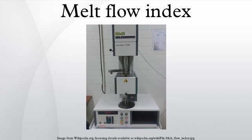Measurement: ISO standard 1133-1 governs the procedure for measurement of the melt flow rate. The procedure for determining MFI is as follows. A small amount of the polymer sample is taken in the specially designed MFI apparatus. A die with an opening of typically around 2 mm diameter is inserted into the apparatus. The material is packed properly inside the barrel to avoid formation of air pockets.